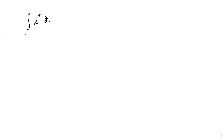In this video, I'm going to show you how we can integrate x to the power of 4 using by-parts. Usually you wouldn't want to use by-parts, but I think it's quite interesting that we can actually use by-parts for something like that. So let's write down the formula for by-parts for easy reference: integrate u dv equals uv minus integrate v du.